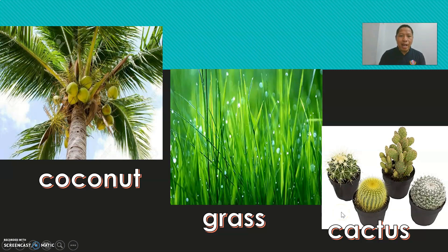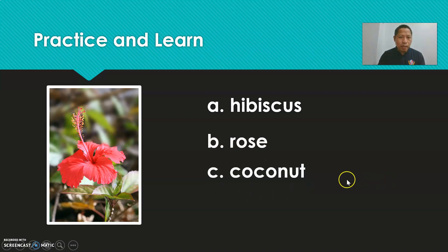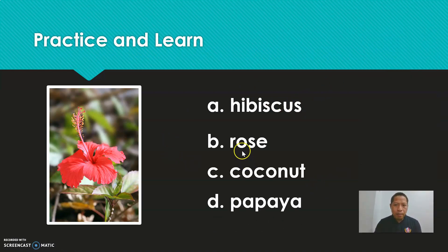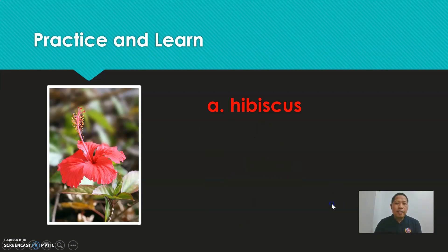We have nine pictures to learn today. Tell me, what kind of plant is this? A) hibiscus, B) rose, C) coconut, or D) papaya. Think for five seconds: five, four, three, two, one. What do you think is the answer? It's a hibiscus. Very good, well done!